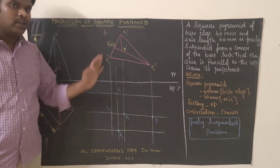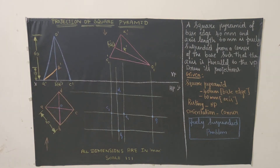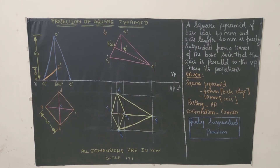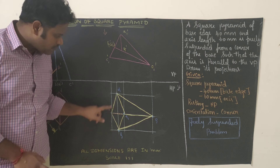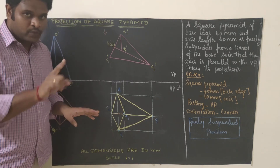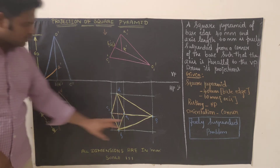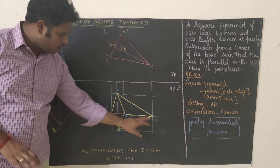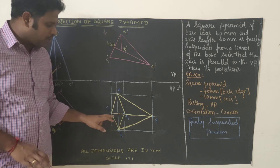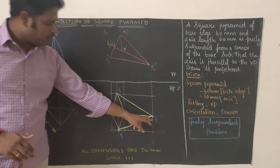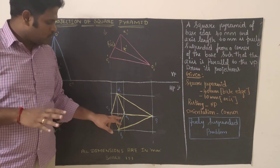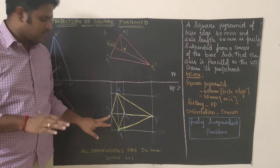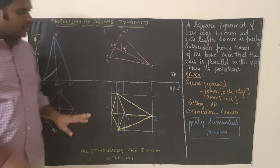Connect all the remaining edges. Join A1 to B1, B1 to C1, C1 to D1, and D1 to A1 — the base edges are complete. Now connect the slant edges: O1 to A1, O1 to B1, O1 to D1 as visible edges. O1 to C1 is hidden, but since O1-A1 is a visible edge it completely covers it, so only A1 to C1 is marked as a hidden (dashed) line. This is the final solution.